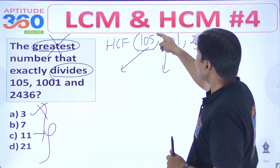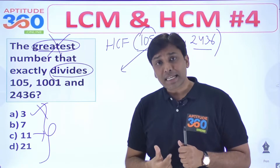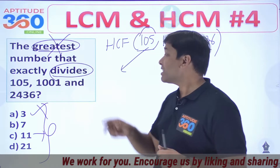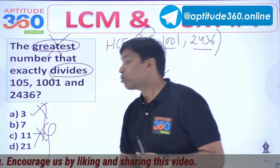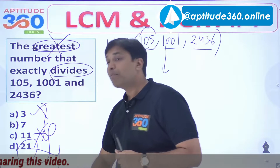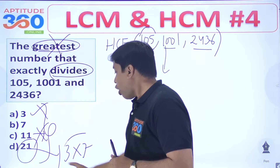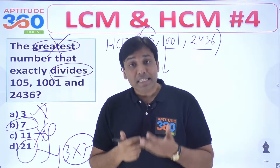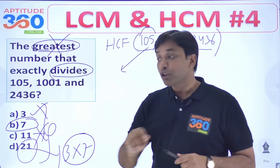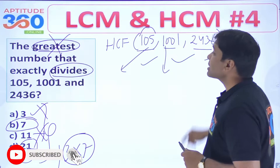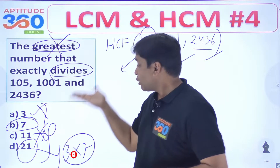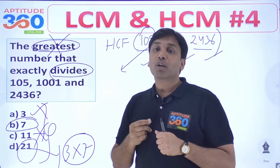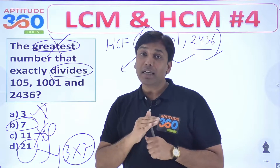Now let's talk about 11. Sum of digits at odd places is 5+1=6, the digit at even place is 0, and the difference is not 0, hence 105 is not divisible by 11 - so 11 cannot be the HCF either. Let's talk about 21. 21 is 3×7; if a number is not divisible by 3, it's not divisible by 21 either. Rather than solving this fully in an exam, take assistance from your options - it will save 3 to 4 minutes.